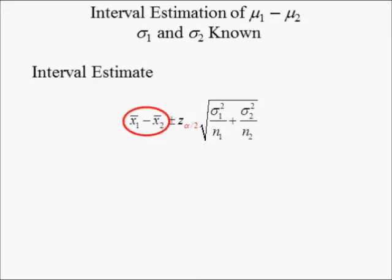The difference in sample means x-bar 1 minus x-bar 2 is the point estimator of the difference in population means. The product of the z-value and standard error — the standard error being the square root of the sum of the ratios of population variances and their sample sizes — is called the margin of error. The margin of error is first added to, and then subtracted from, the difference in sample means, resulting in two values: the smaller value as a worst-case scenario and the larger as the best-case scenario.